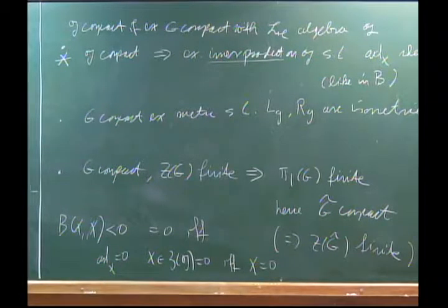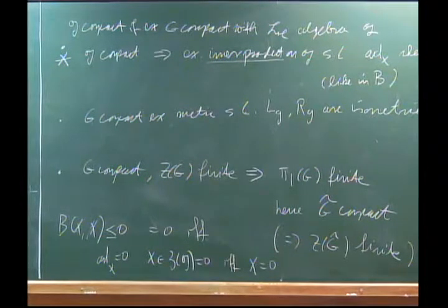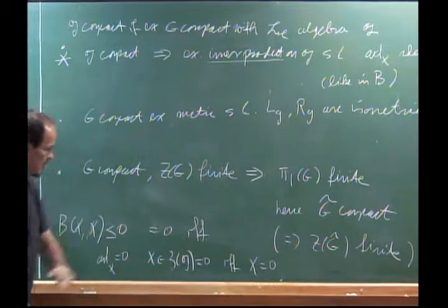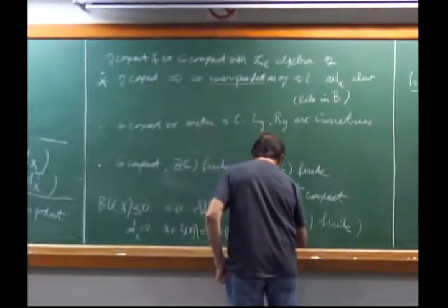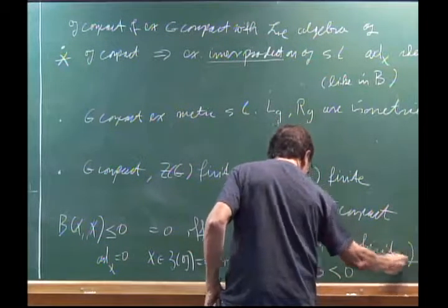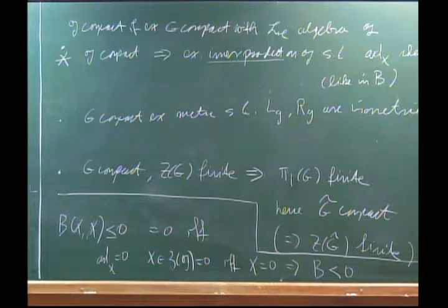So B(x,x) ≤ 0, equal to zero if and only if the adjoint vanishes, which means x is in the center, which means x is trivial. This proves B is negative definite. That's a really useful fact — then we can use minus B as an inner product.